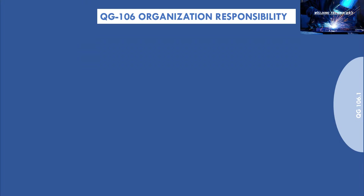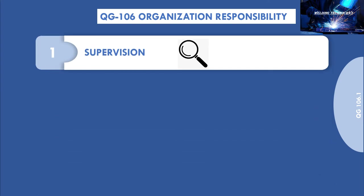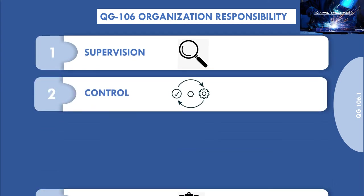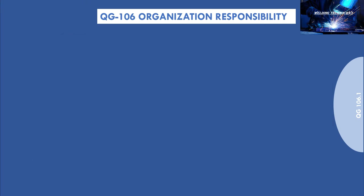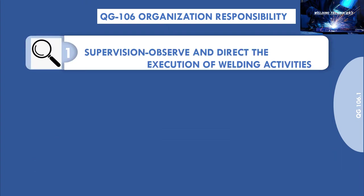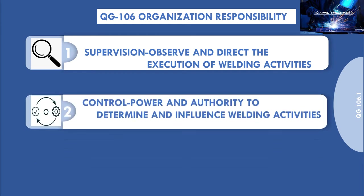As per QG-106 Organization Responsibility, the designated welding engineer is given the following four responsibilities for supervision, control, evaluation, and acceptance of qualification testing. Let us understand each in detail.